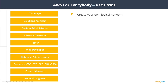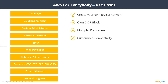If you're a network engineer, you can create your own logical network in AWS with your own CIDR block and as many IP addresses as you want. This is your secure network, and you can connect it to multiple networks in the cloud or to your on-premises network, making your life really easy.